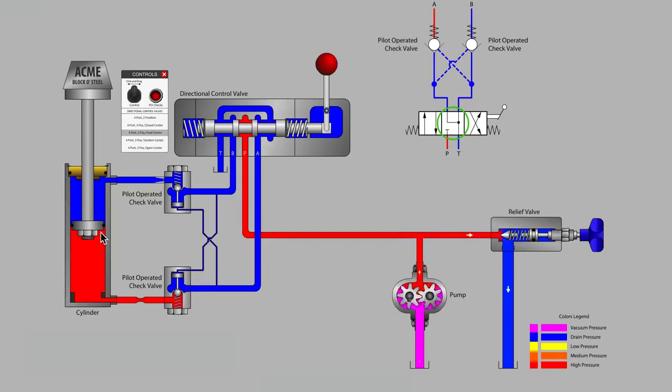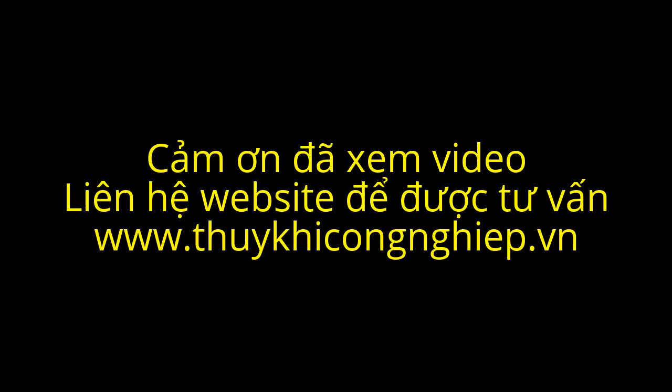In both of the four-port three-position directional control valves that we studied, the closed center and the float center, the P-port was blocked. The use of these valves is typical to what is referred to as a closed center hydraulic system. In many cases, our gear pump would be replaced by a pressure compensated variable displacement pump in order to avoid excessive pressure.